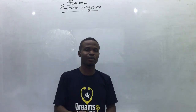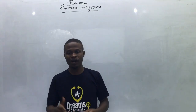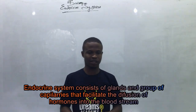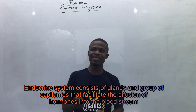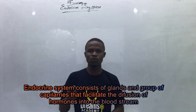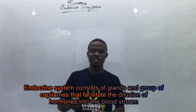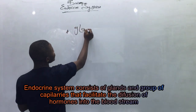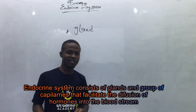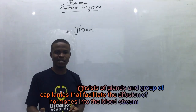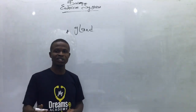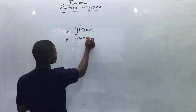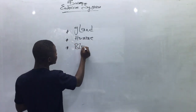For the purpose of this lecture we'll be concentrating on the work of the endocrine system as a homeostatic system. Now I define the endocrine system: it consists of a group of glands and capillaries which facilitate the diffusion of hormone into the bloodstream. Two key words here: hormone and bloodstream.